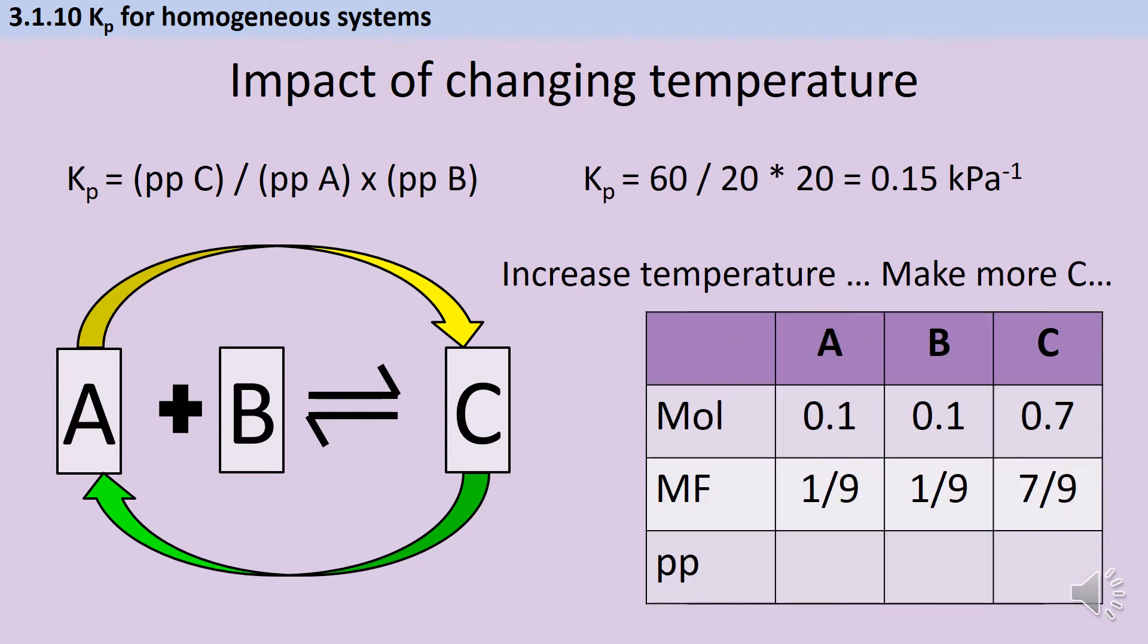Our next step is to work out some mole fractions. So we add those all up and we get a total of 0.9. And then we do 0.1 divided by 0.9, which simplifies to a ninth. So we've now got mole fractions of a ninth, a ninth and seven ninths. And we now need partial pressures because that's what's going to go into our Kp expression.